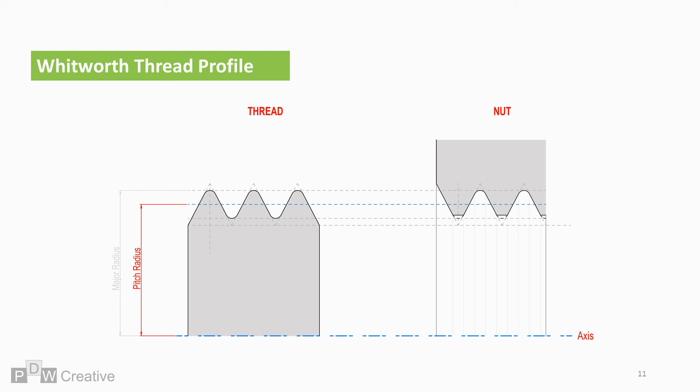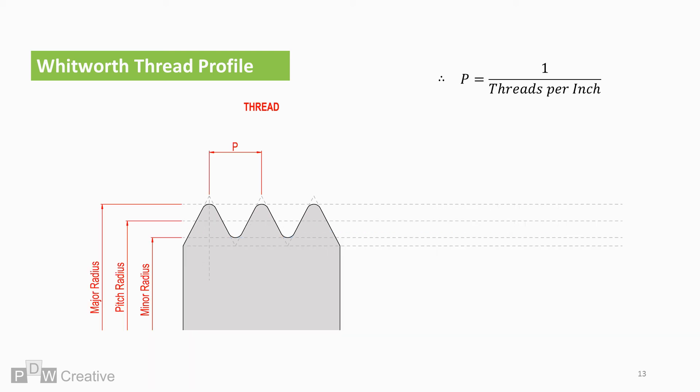The pitch radius is the effective radius. The minor radius is the smallest radius and often describes the root of the thread. The pitch is the distance between tooth profile sections and can be found by dividing one by threads per inch.